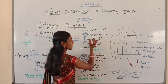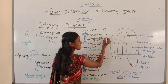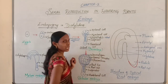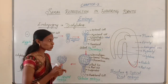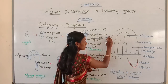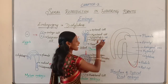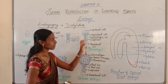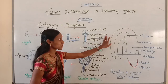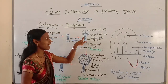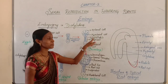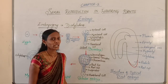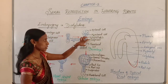Very importantly, this hypophysis later develops into the radicle and root cap. So, this hypophysis only develops into the radicle and root cap. The last cell of the suspensor becomes hypophysis, and this hypophysis later develops into the radicle and root cap.